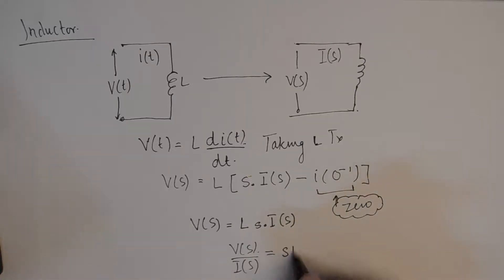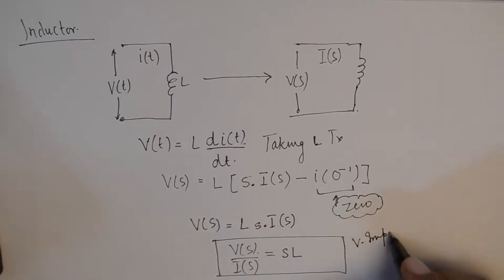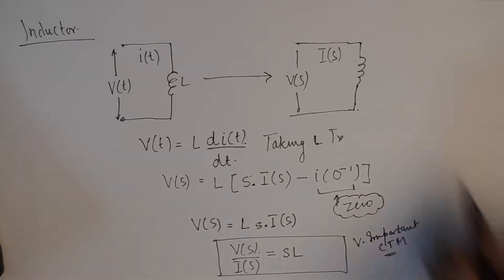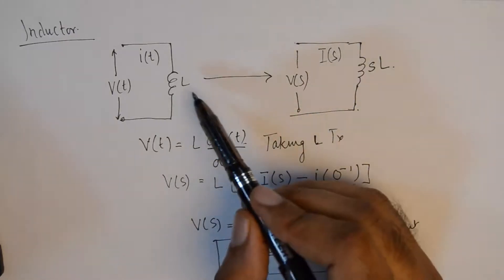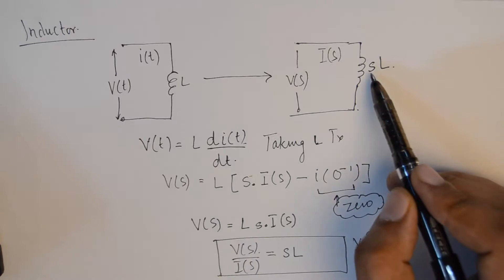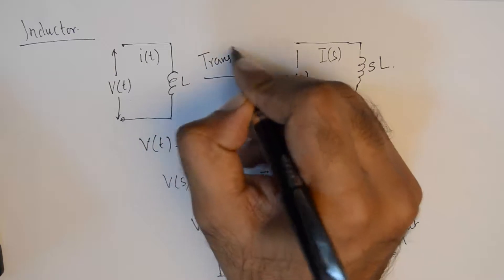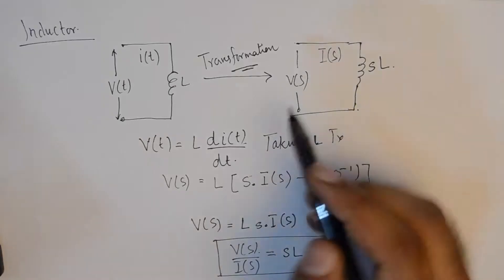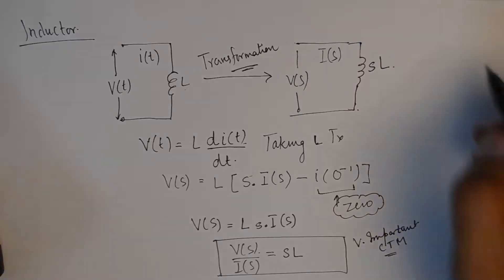The only term which is left is s·I(s) multiplied by the inductance, so the value of V(s)/I(s), which is the impedance we are looking for, becomes equivalent to s·L. This is a very important commit-to-memory inference — the Laplace transform of inductor becomes equivalent to s times the value of the inductance, so whenever transformation occurs, L gets modified into s·L.